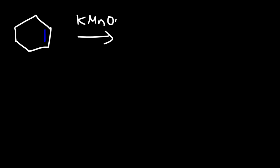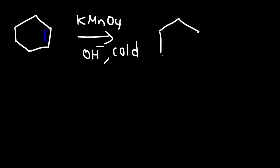What's going to happen if we have cyclohexene and we react it with potassium permanganate, KMnO₄, under basic conditions, keeping the temperature low? What's going to be the major product? Under these conditions, you're going to get syn-dihydroxylation. So you're going to get a diol — a 1,2-diol — but with syn addition, or syn stereochemistry.